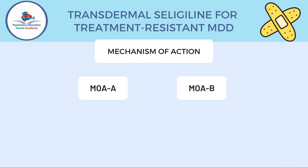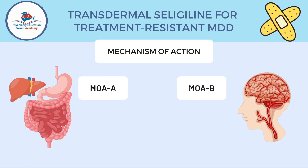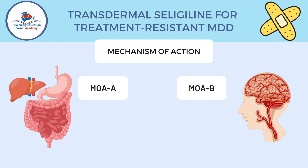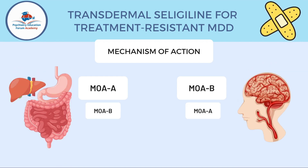There are two major enzymes in our body: monoamine oxidase A and monoamine oxidase B. They are present in most locations, but monoamine oxidase A is primarily seen in the gastrointestinal tract and the liver, where it predominates. Monoamine oxidase B predominates in the brain tissue, though small amounts are present in both areas.